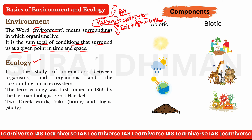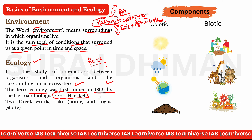When we try to study the interactions in the environment, we need to learn the rules — we need science. So ecology is a science through which we learn about interactions with the environment on a daily basis. Ecology was first coined in 1869 by Ernst Haeckel, the German biologist.